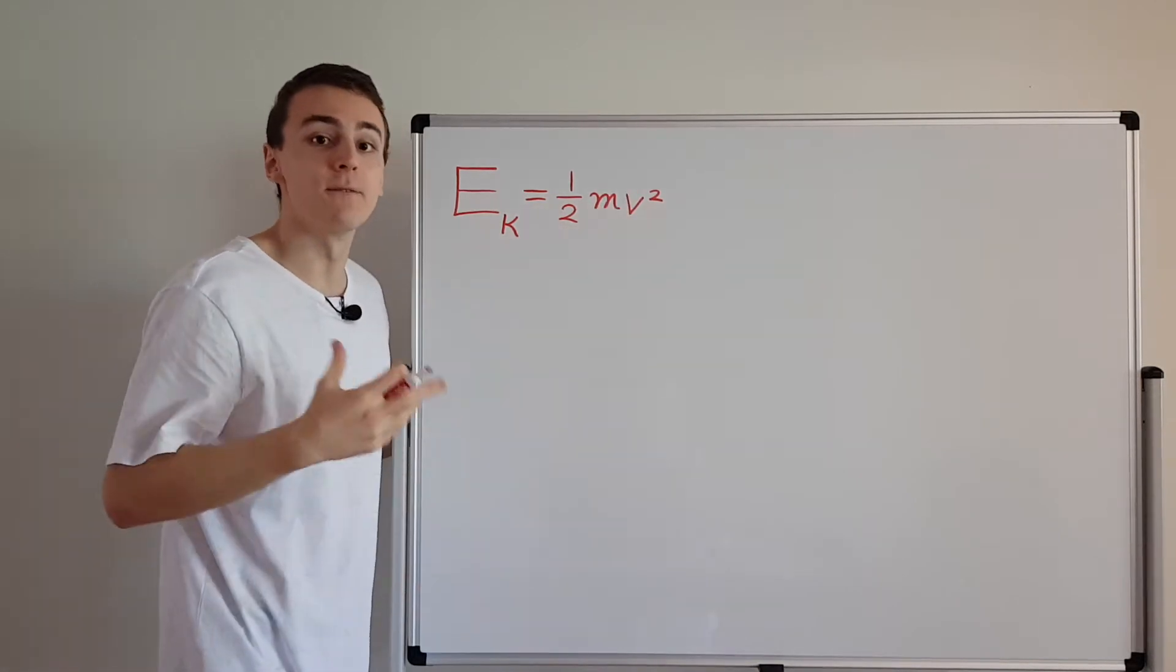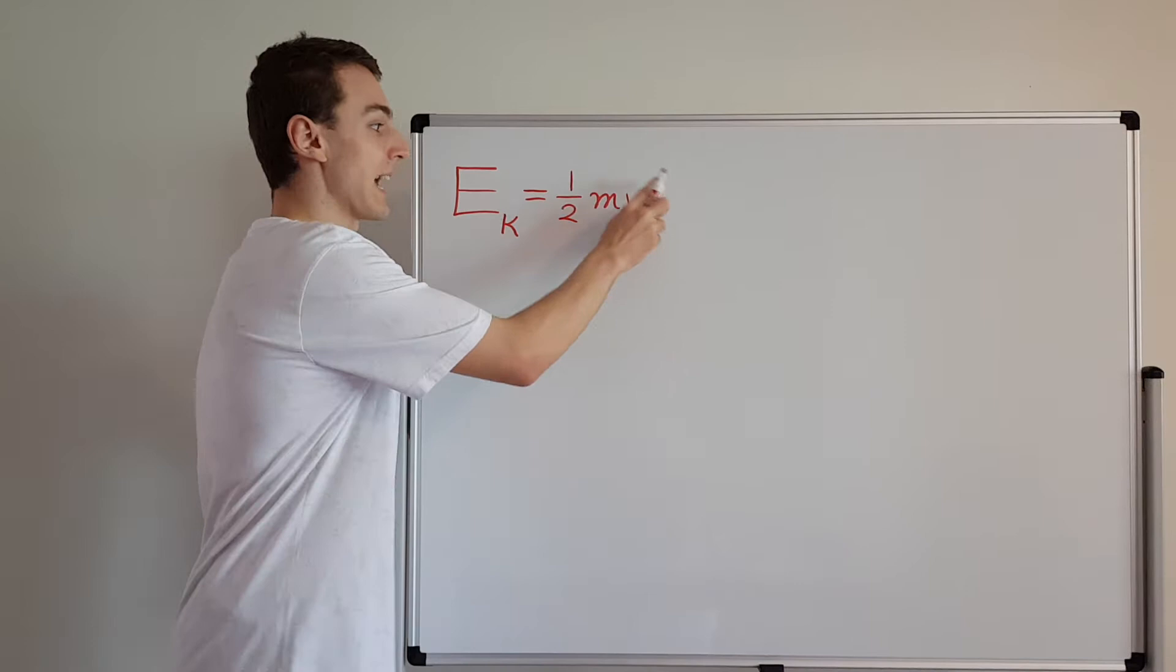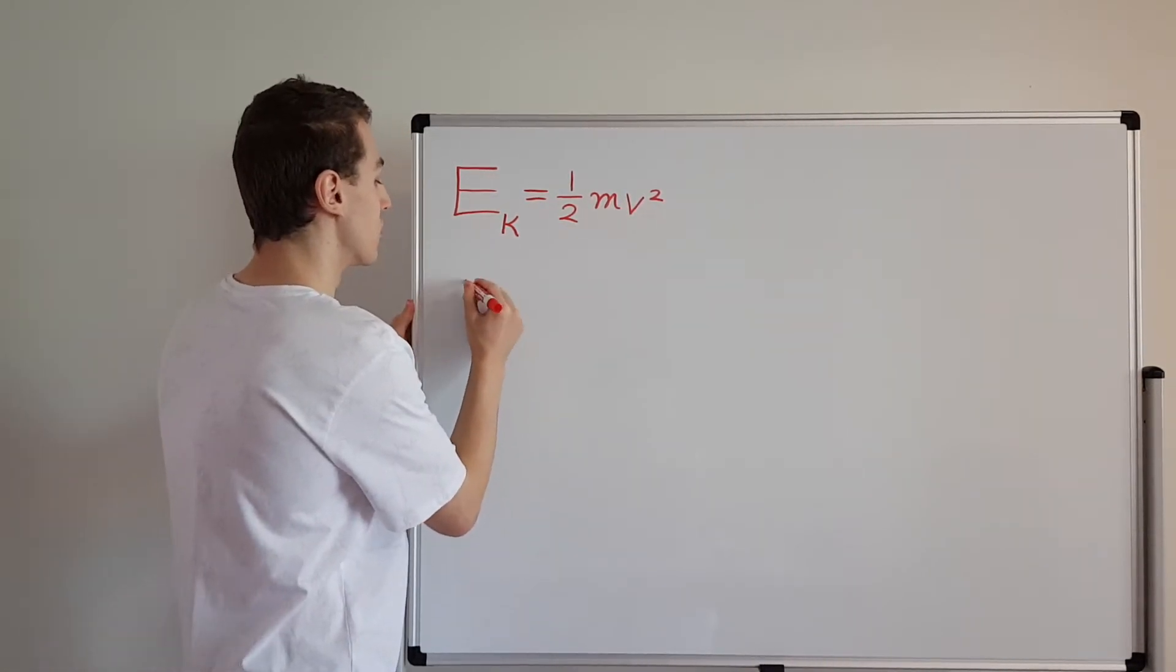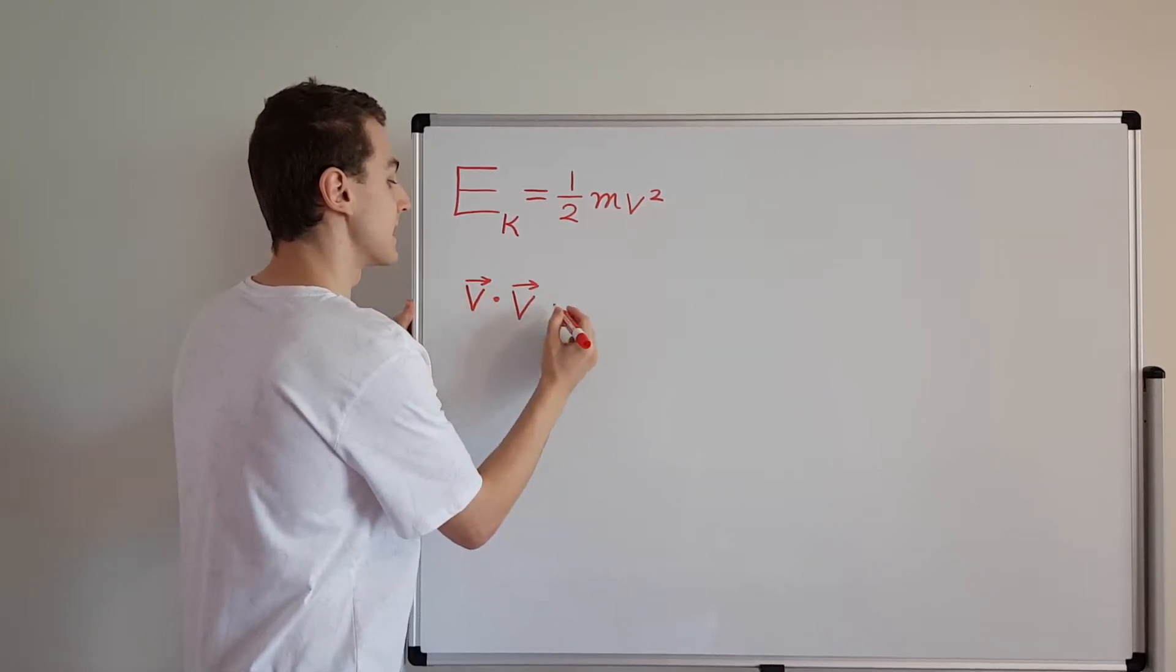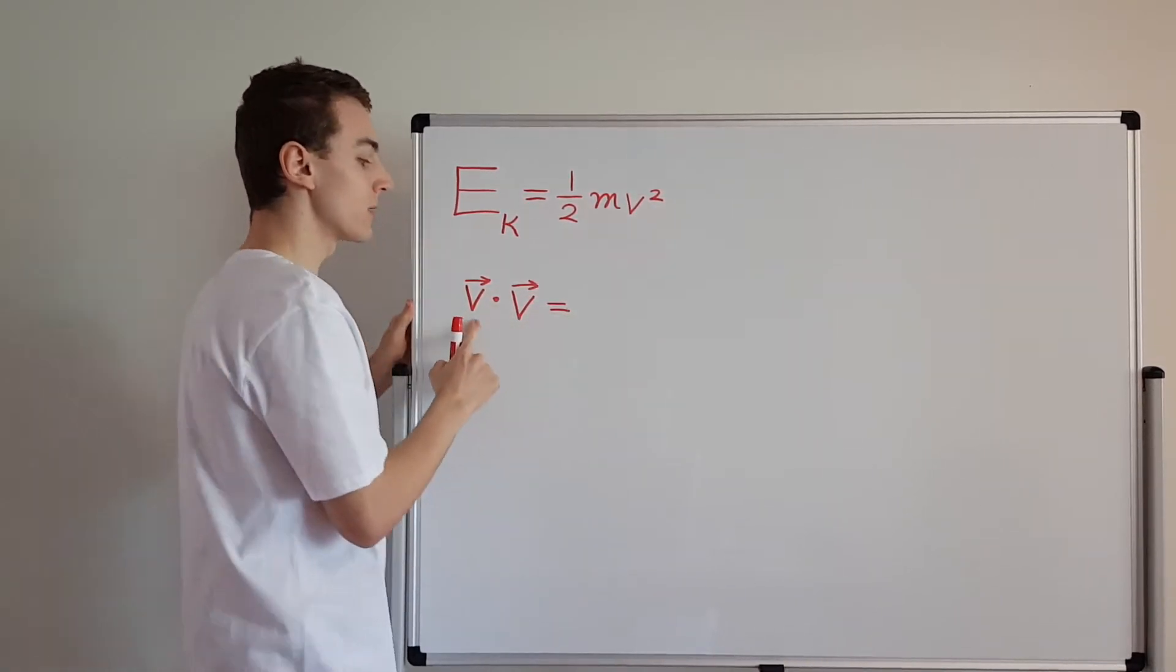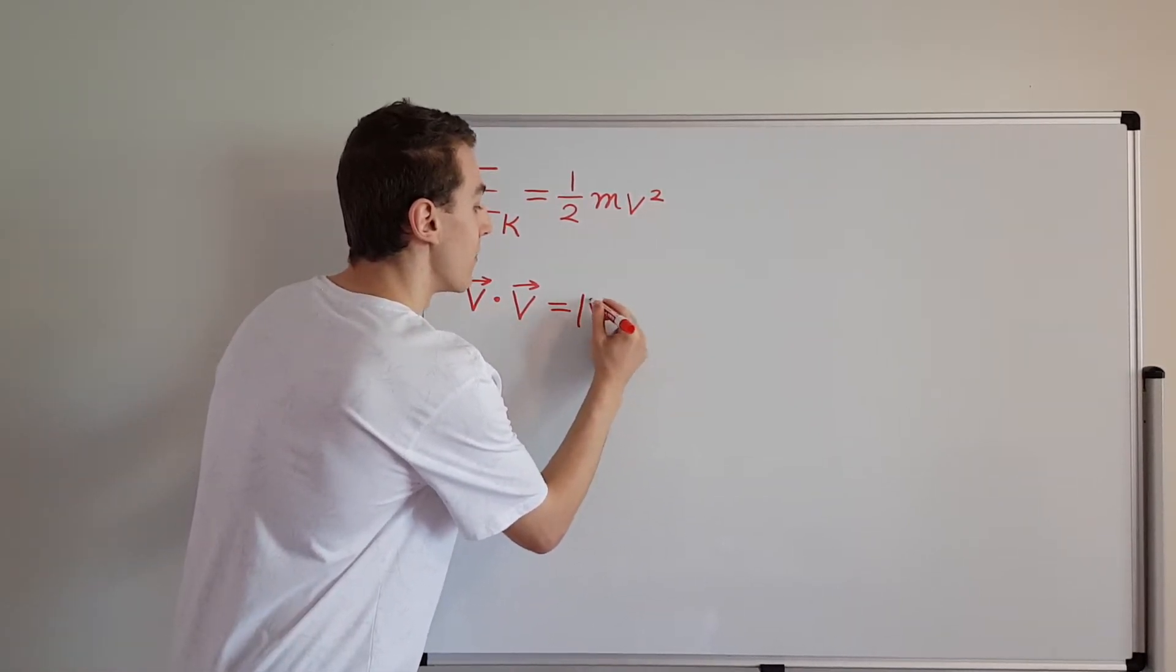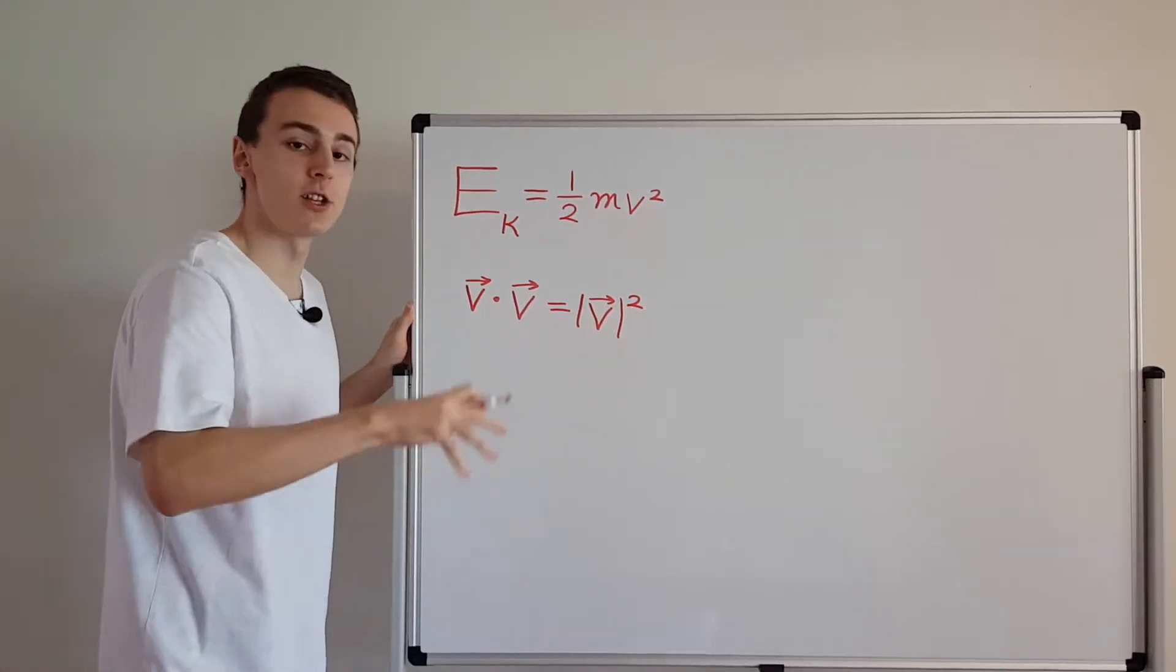Velocity is a vector quantity, so we have to be careful when we're squaring it. What does this actually mean? In general it means we're taking the dot product of the velocity vector with itself. If you take the dot product of a vector with itself, you get the magnitude squared.